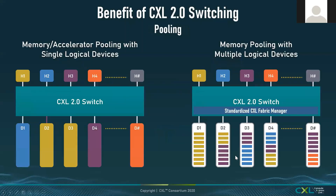A second major feature of CXL 2.0 is multi-host capable switches. A CXL switch can connect to multiple CPUs and multiple devices. For example, host one connects to device two and device three forming one hierarchy, while host three connects to device four in a separate hierarchy. This capability is enabled using the CXL Fabric Manager, which runs in conjunction with the CXL 2.0 switch.